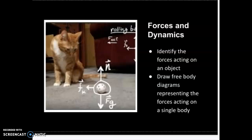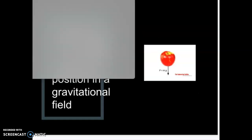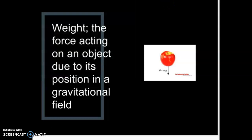We need to label the forces accurately and secondly we need to draw diagrams to show what's going on. So the first force that we're going to talk about is weight. Weight is the force acting on an object due to its position in a gravitational field. This is what we looked at in the previous lesson.